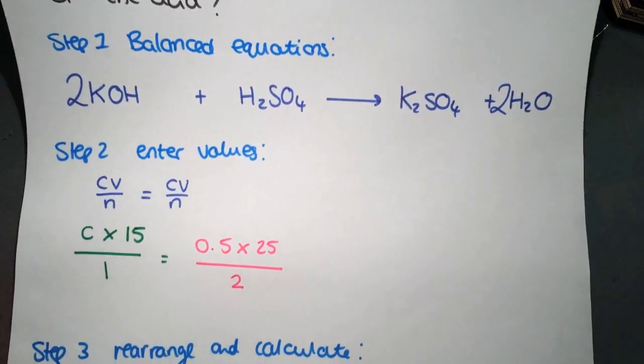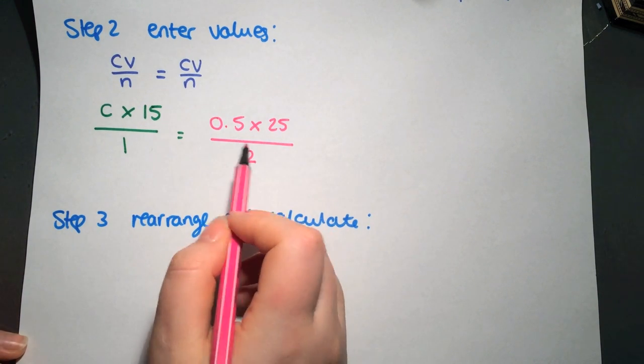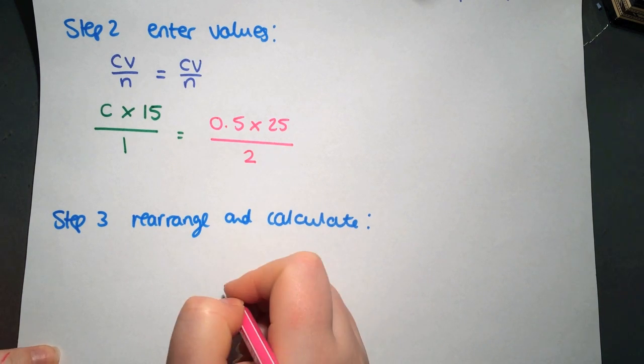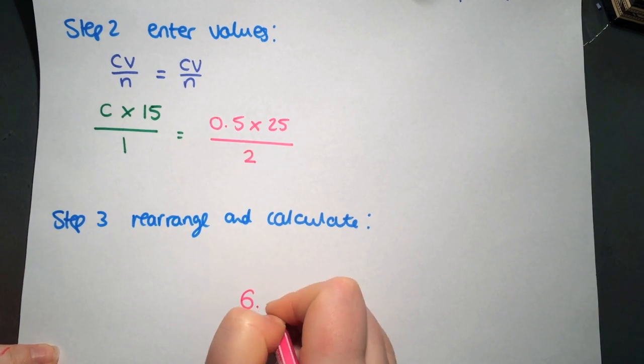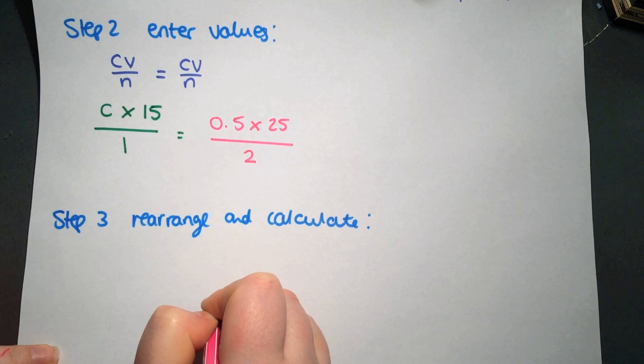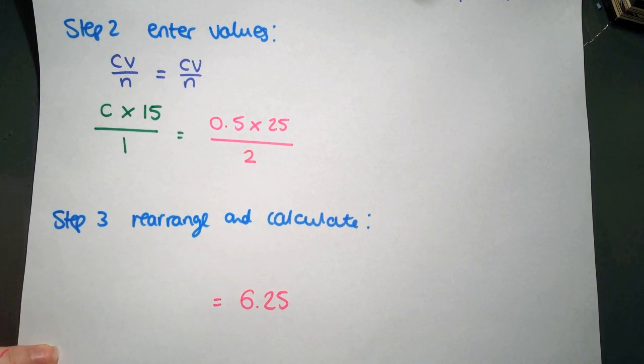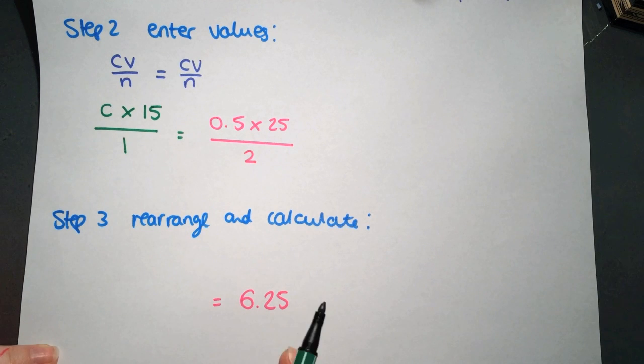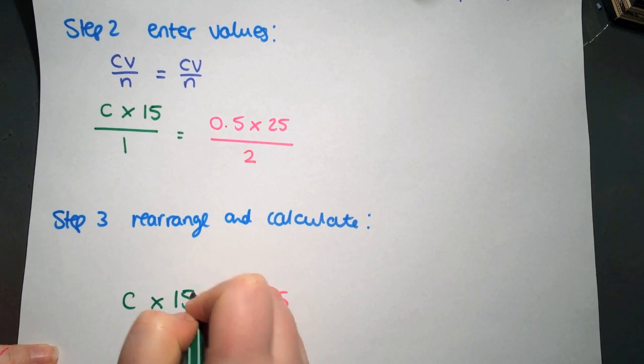Now when we look to our rearranging and calculation step, again we've got all three values on this side so we can fully calculate that out. So that gives us a value of 6.25 when you do that calculation. And on this side we have C times 15 divided by 1, so we can ignore the dividing. So we end up with C times 15.